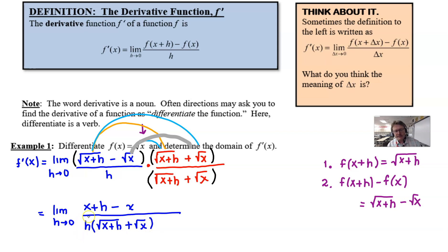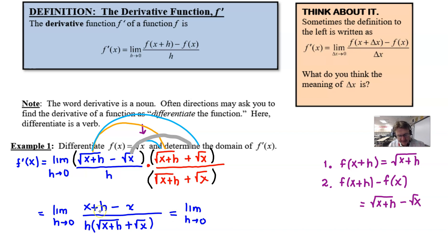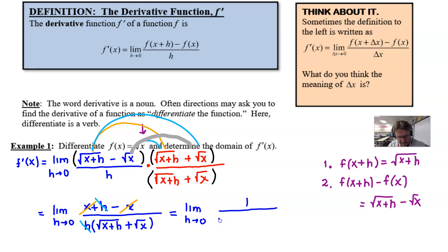For the denominator, don't multiply the h through — leave it so the h is exposed out front, because that h is what's causing the problem. Now you should see cancellations: the x+h and −x in the numerator cancel, leaving just h. That h cancels with the h in the denominator. Be careful — that leaves a 1 in the numerator, not a zero. The denominator remaining is √(x+h) + √x.